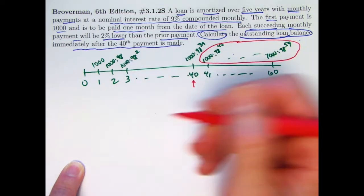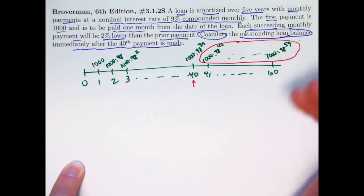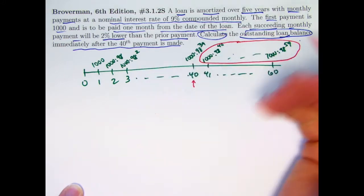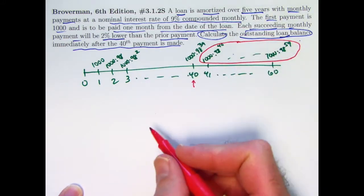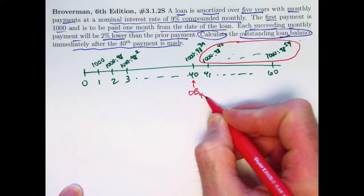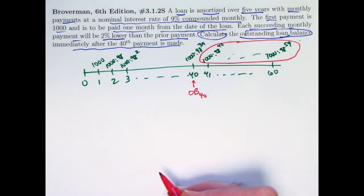The retrospective method, looking backward in time, is perhaps not as easy here because we'd have to know what the original balance was. We could find that, but it would take more work. Seems that the prospective method is going to be best here to find OB40, outstanding balance at time 40 immediately after that payment at time 40.